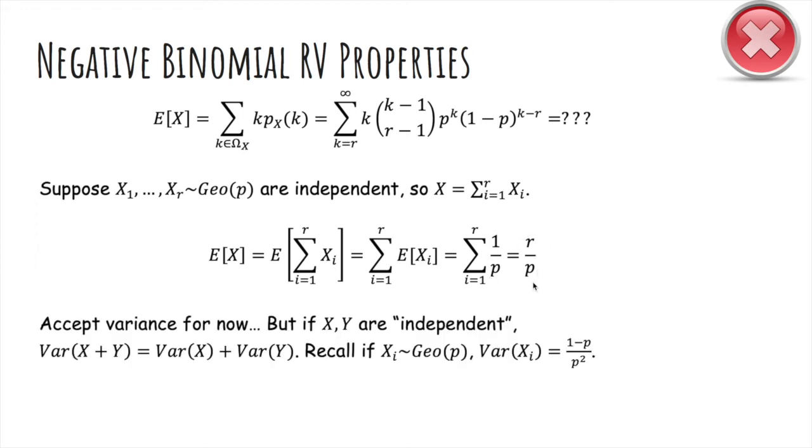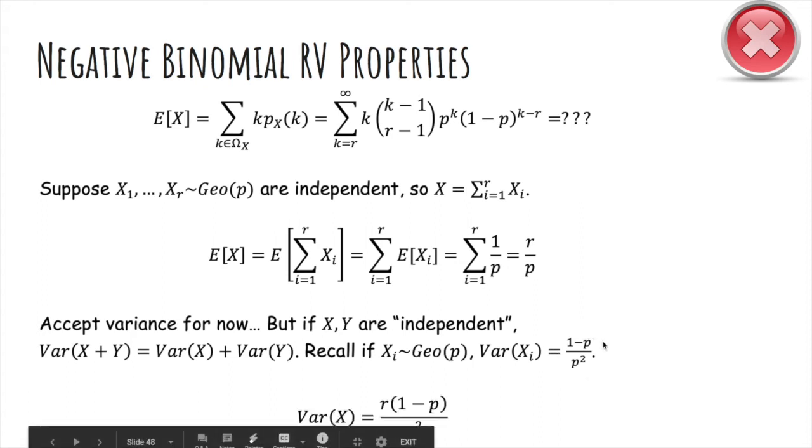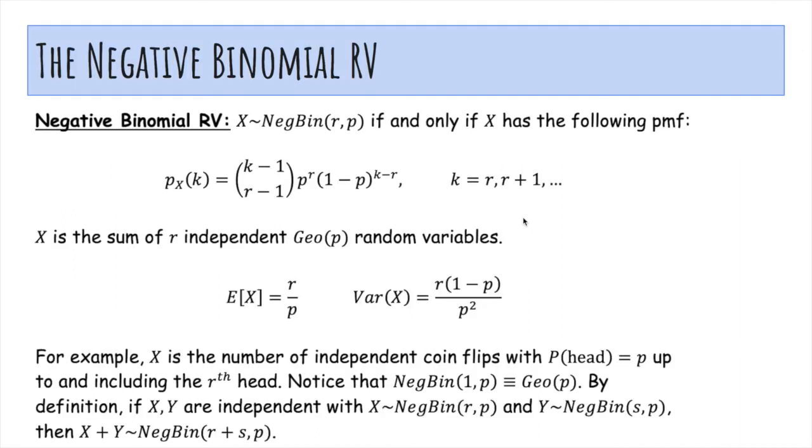And we have this other property that we had to accept last time, which is the variance of a sum of independent variables is the sum of the variances. So the variance of a geometric is this. So the variance of our negative binomial will be r times that because it's the sum of r copies of a geometric.